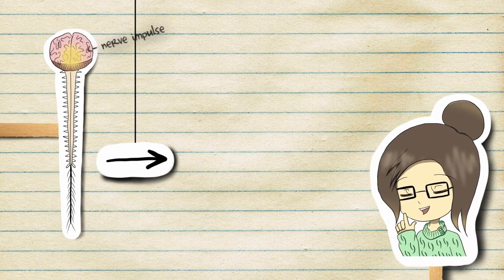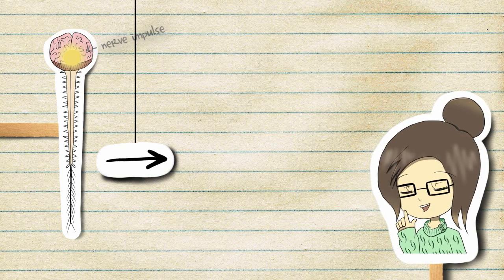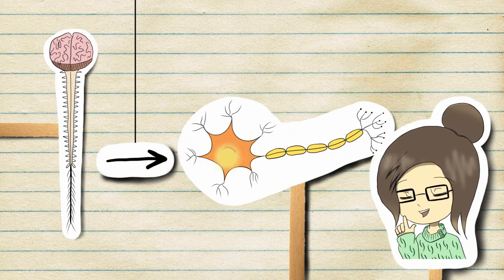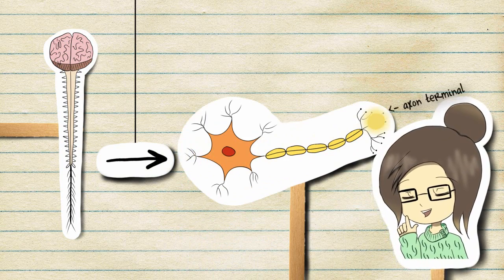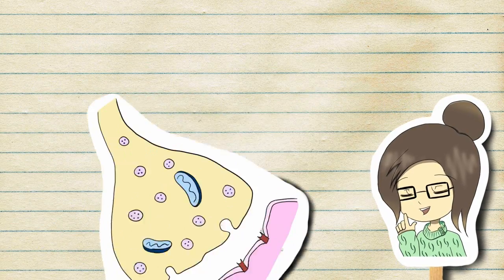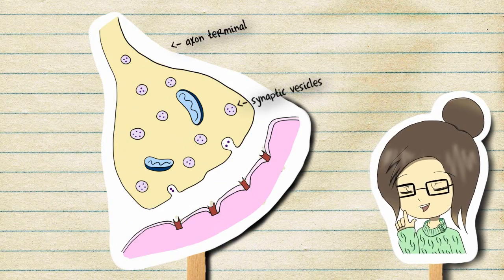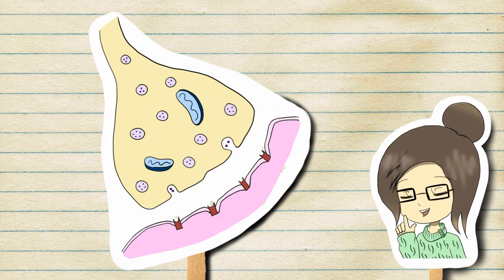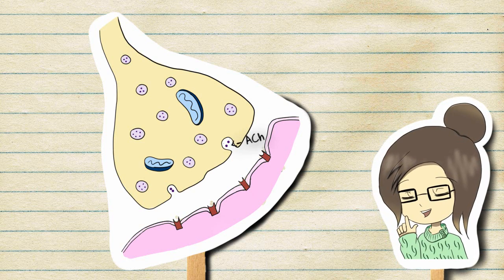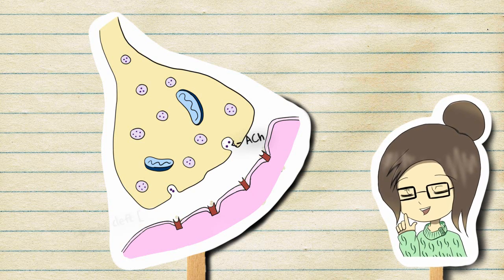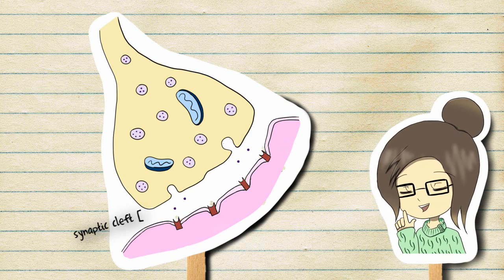First off, the brain sends a message, or nerve impulse, to contract down the spinal cord to the motor neuron, and then to an axon terminal. The synaptic vesicles in the axon terminal release the neurotransmitter acetylcholine, or ACH, into the synaptic cleft through exocytosis.